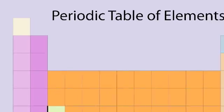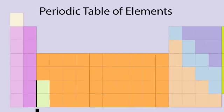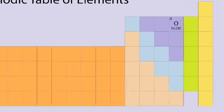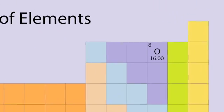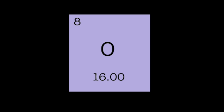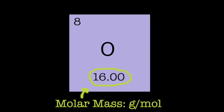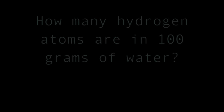You can use the periodic table to find the atomic mass or molar mass of any element. Let's look at oxygen. Oxygen is a lot bigger than hydrogen, so it's gonna weigh more. It's 16 grams per mole.